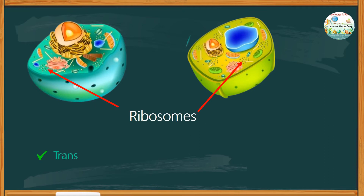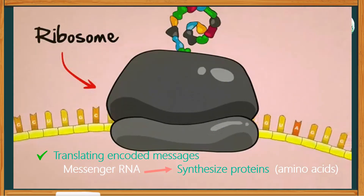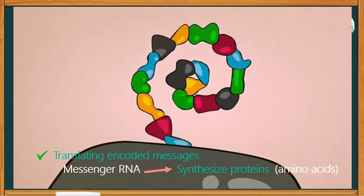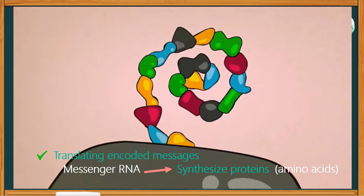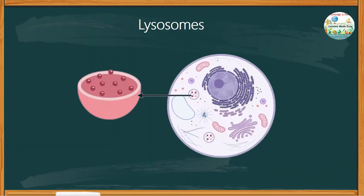The ribosomes are responsible for translating encoded messages from messenger RNA molecules to synthesize proteins from amino acids. They assemble amino acids to form essential proteins that carry out cellular functions.